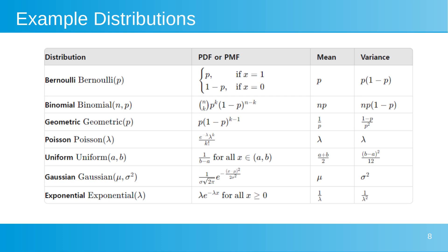Here are some example distributions. Bernoulli distribution represents the outcome of a single trial with success probability P. Binomial distribution models the number of successes in n independent Bernoulli trials. Geometric distribution represents the number of trials until the first success. Poisson distribution describes the number of events occurring in a fixed interval of time or space. Uniform distribution represents a continuous random variable uniformly distributed over the interval A to B. Gaussian distribution, also known as normal distribution, is characterized by its mean and variance. Exponential distribution models the time between events in a Poisson process with a constant hazard rate lambda.